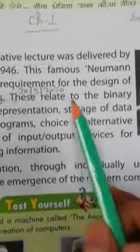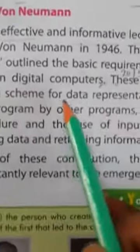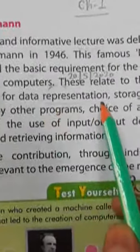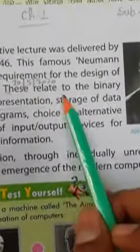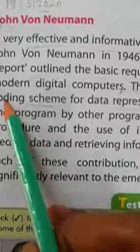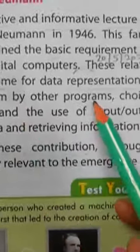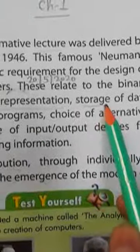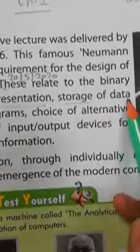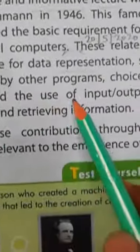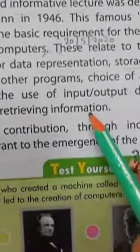These relate to the binary coding scheme for data representation — scheme means Yojana, representation means Prathiniditu. ये data Prathiniditu के लिए Binary Coding Yojana — storage of data and program by other programs — storage means Bhandaran — data parikrya के Bhandaran और अन्य कार्यक्रमों के लिए.